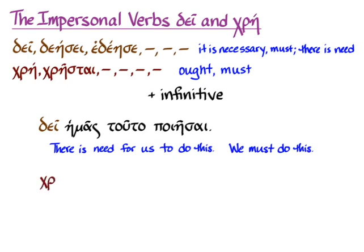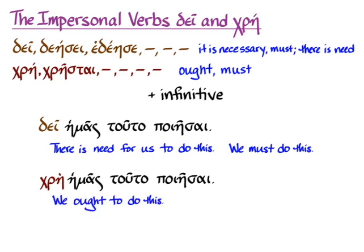Similarly, with χρή ἡμᾶς ταῦτα ποιῆσαι — you could think of that as 'it ought to be for us to do this,' but that's really awkward English. You might as well just translate 'we ought to do this' or 'we must do this.' When you see a form of χρή, look for the accusative that is the subject of the infinitive and have it be the subject of 'ought' or 'must.'